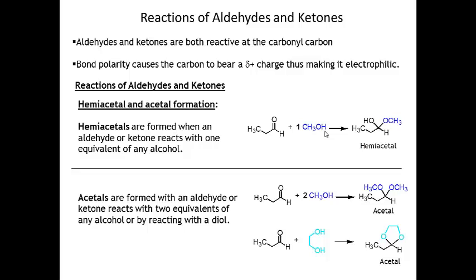Aldehydes and ketones do some really neat reactions. One of the more important is formation of either an acetal or a hemiacetal. If you take an aldehyde and react it with one equivalent of alcohol, you form a hemiacetal — the oxygen from the alcohol attacks your carbonyl, you end up with an alkoxy group attached to the carbonyl carbon, the pi bond breaks, and you get an alcohol in the product. We will discuss the mechanisms in class.